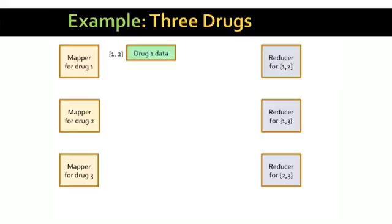Okay. So the mapper for drug one produces a key value pair where the key is the set {1, 2}, and the value is the megabyte or so of data about the patients taking that drug. The mapper for drug one also produces another key value pair. The value is the same, the record for drug one, but the key is different. Here it is the set {1, 3}.